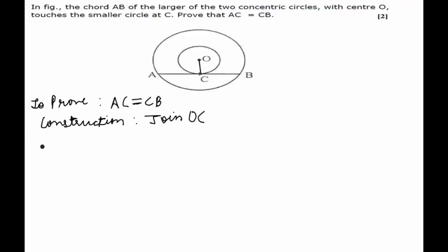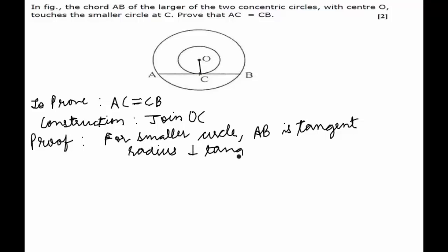Now if we look at the smaller circle, AB behaves as a tangent with the smaller circle as it is touching it at the point C. So we say that for smaller circle AB is the tangent, and OC is the radius. And we know that radius is always perpendicular to the tangent. And hence OC would be perpendicular to tangent AB, which will make angle OCB equal to 90 degrees.